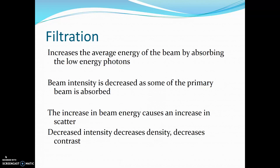Filtration increases the average energy of the beam by absorbing the low energy photons. Beam intensity is decreased as some of the primary beam is also absorbed. The increase in beam energy causes an increase in scatter. Decreased intensity decreases density and contrast.